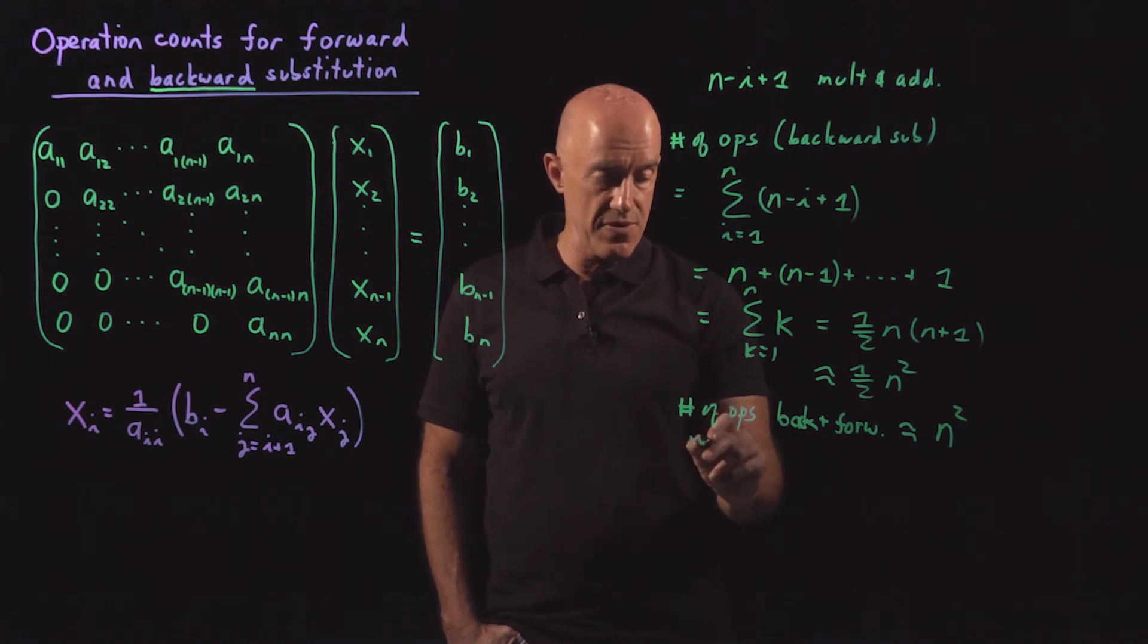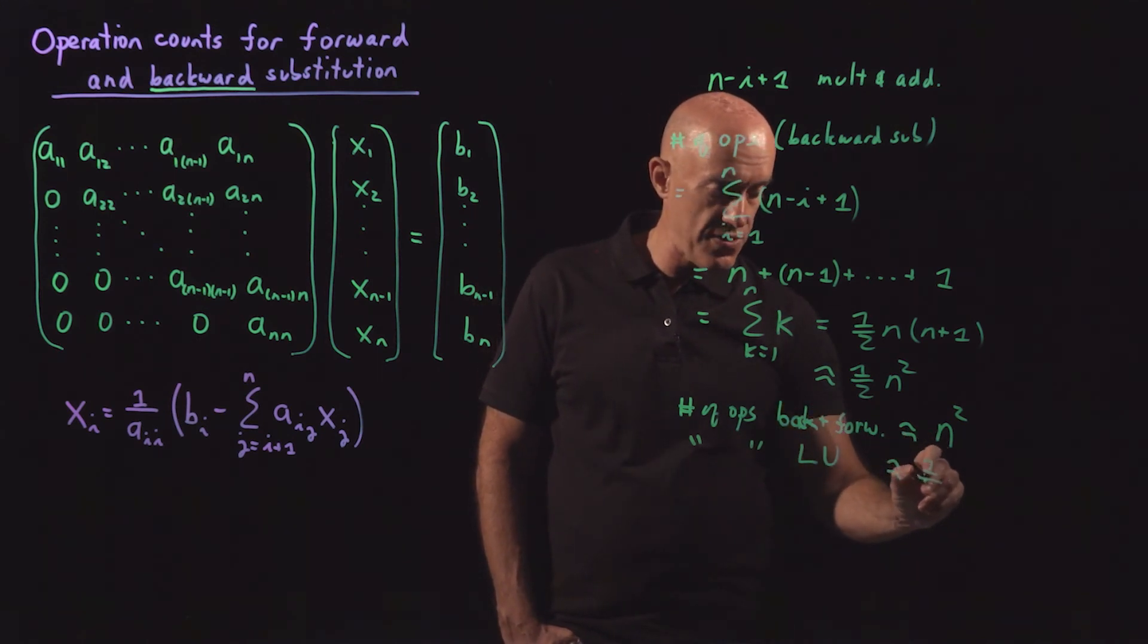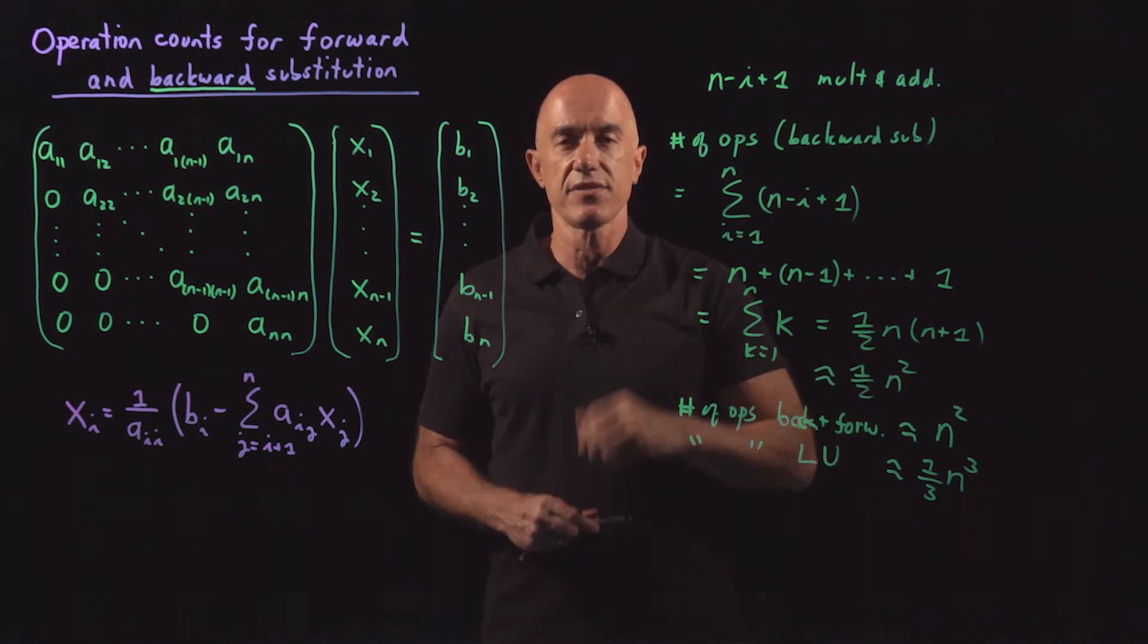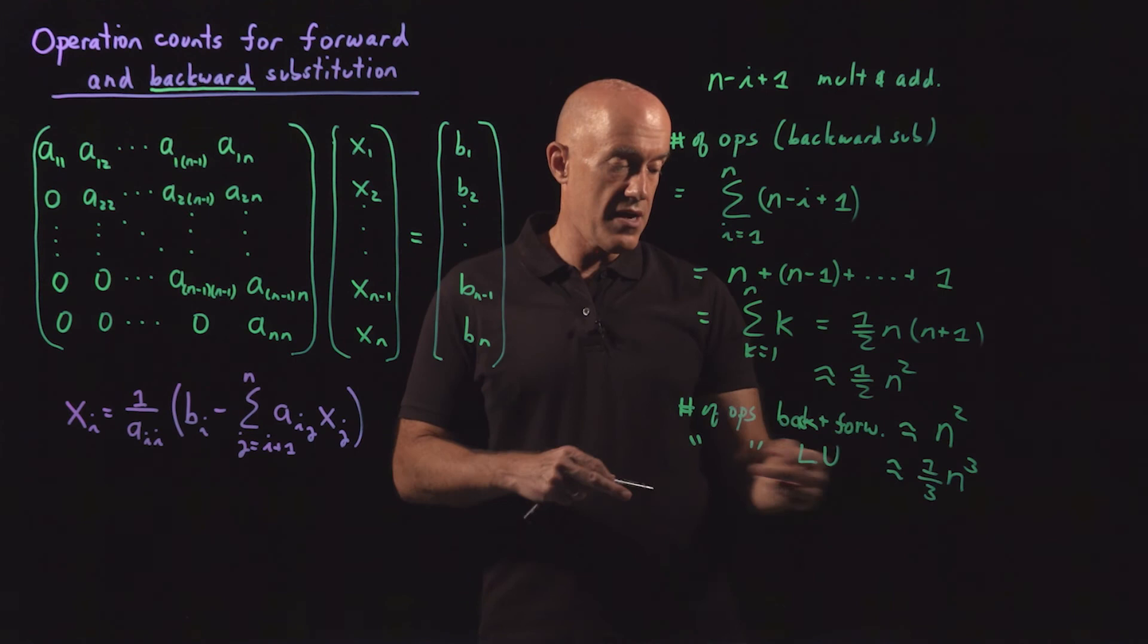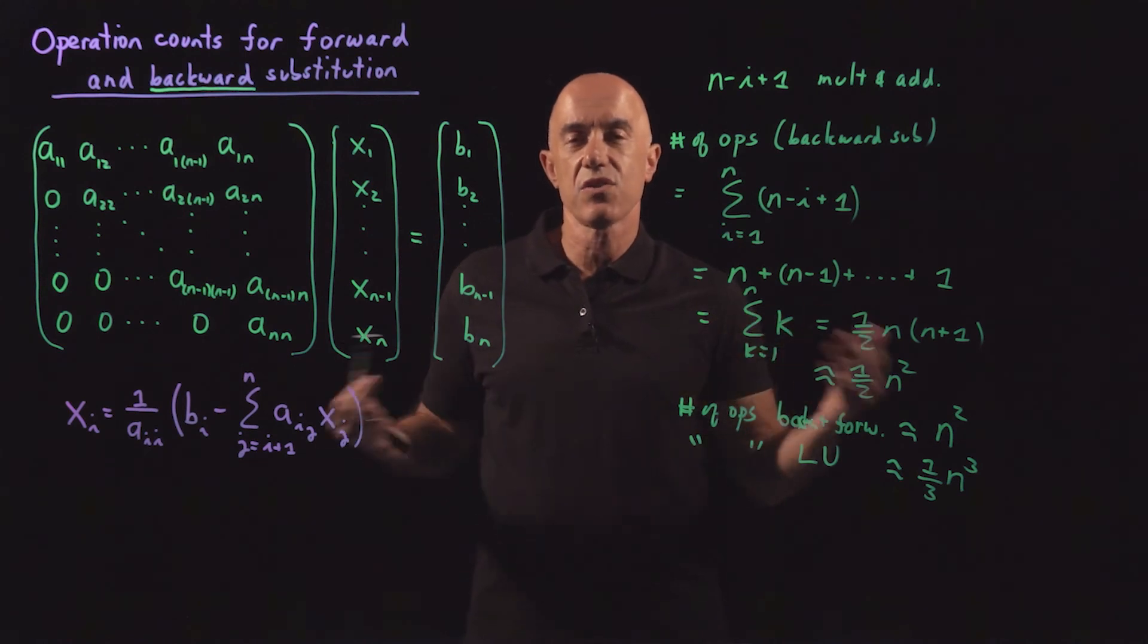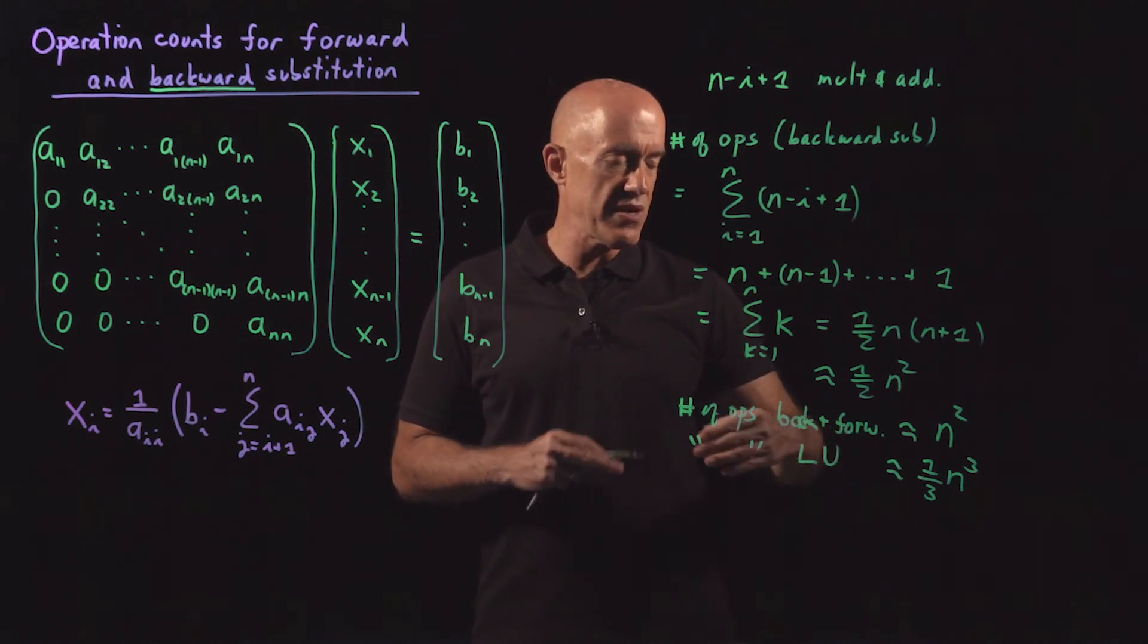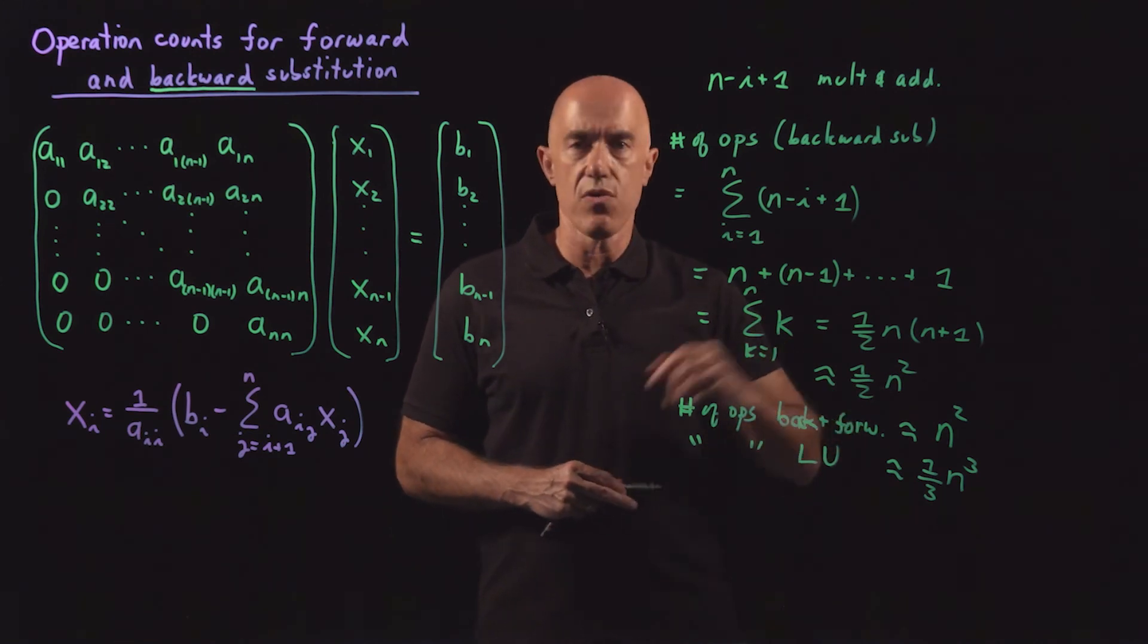Okay? Remember the number of operations for Gaussian elimination or LU decomposition goes like 1/3 n cubed. Okay? How do we compare these two? So for instance, if n was a thousand, so you have a thousand by a thousand matrix, a thousand equations and a thousand unknowns, then LU decomposition would take a thousand divided by 3 longer. So it would take about 300 times longer to do a thousand by a thousand matrix by solving LU decomposition every single time, then just doing it once, then just doing it once and then always solving the subsequent equations using forward and backward substitution.